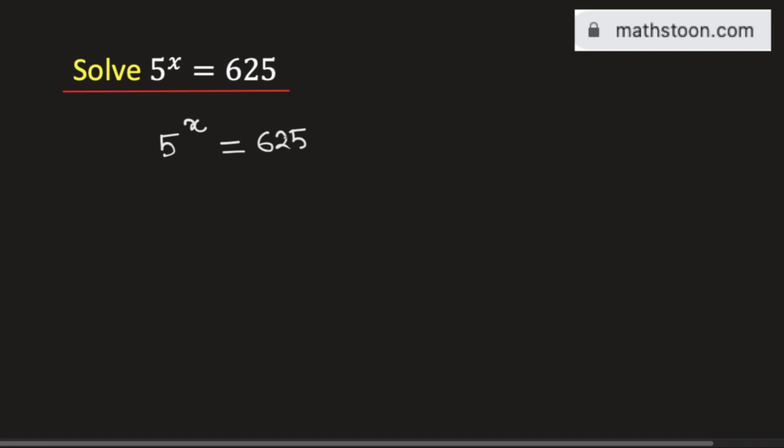At first, we will find the prime factorization of 625. As it has last digit 5, we can divide it by 5 and we get 125.